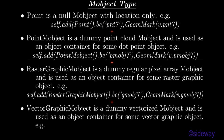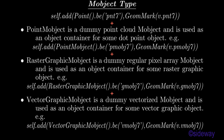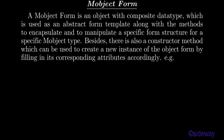VectorGraphicMobject is used as an object container for some vector graphic objects. For example: self.add(VectorGraphicMobject.b.bmobj7, geometry_mark.b.bmobj7). A Mobject form is an object with composite data type, which is used as an abstract form template along with the methods to encapsulate and manipulate a specific form structure for a specific Mobject type. There is also a constructor method which can be used to create a new instance of the object form by filling in its corresponding attributes accordingly.